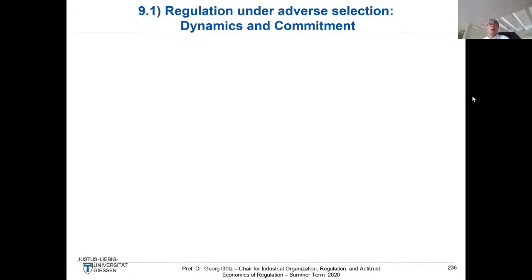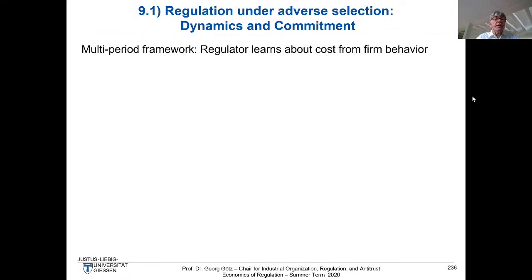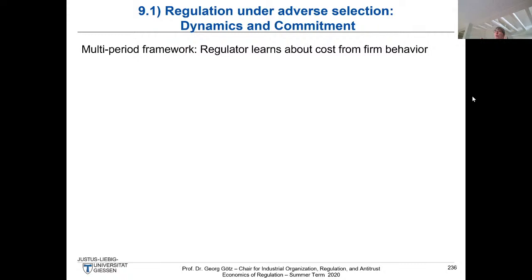The last topic of these advanced topics on adverse selection concerns dynamics and commitment. Regulation is typically a multi-period framework — for example, German incentive regulation in energy and electricity has five-year regulatory periods, similar to many network industries in the UK. In telecoms regulation, there were periods of only 18 months, now more like three years. In this multi-period framework, what we already learned when discussing rate-of-return regulation applies: if you have a re-evaluation after five years, you have what is called a ratchet effect.